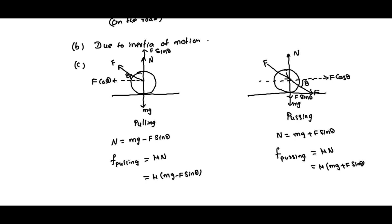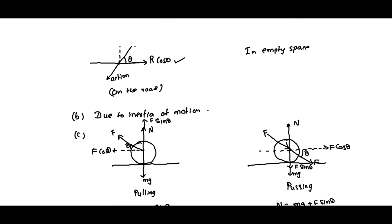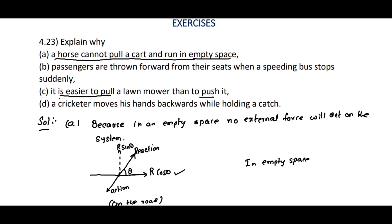From these two cases we can show that the frictional force in the case of pulling is smaller than the frictional force in the case of pushing. So we have to apply more force to overcome the friction in the case of pushing compared to pulling. That is why it is easier to pull a lawnmower than to push it.